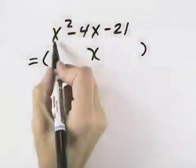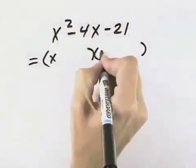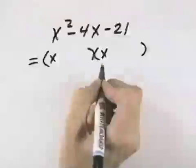Since the first term is x squared, that means each of our first terms in our factors will have to be x, so that their product is x squared.